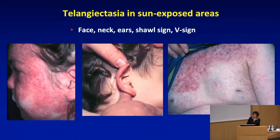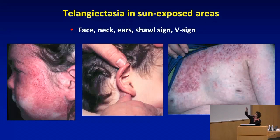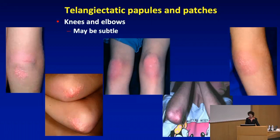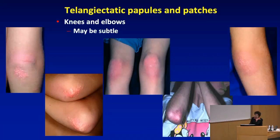Other sun-exposed areas show a lot of involvement with telangiectatic erythema on the face. Always look at the ears — they can be bright red and can be the only area involved. The shawl sign, the V of the neck, and knees and elbows are also affected. Knees and elbows can show a papular eruption, or it's very often macular or patch-like, sometimes very subtle, but always a place to look.